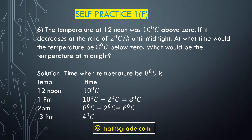Question number 6: The temperature at 12 noon was 10 degrees Celsius above 0, that is plus 10 degrees Celsius. If it decreases at the rate of 2 degrees Celsius per hour until midnight, at what time would the temperature be 8 degrees Celsius below 0, that is minus 8 degrees Celsius? Also, what would be the temperature at midnight?